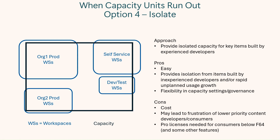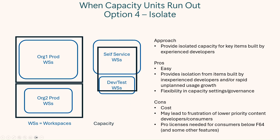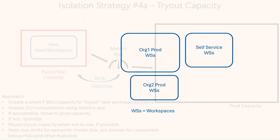A fourth option is really just a variation on scale out — I call it isolate. In this case, you're providing independent capacities for priority content that's properly sized, while the other stuff is maybe fighting it out on a capacity that may not be properly sized. That's why it looks almost the same as scale out; you get all the same kinds of pros and cons, except that folks with items on the less-prioritized capacity may get a little frustrated. I want to cover three variations on isolate for you to consider when leveraging multi-capacity to protect your workloads.